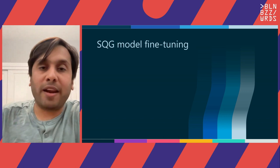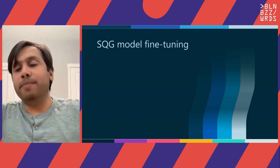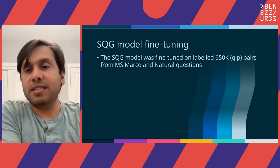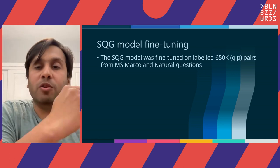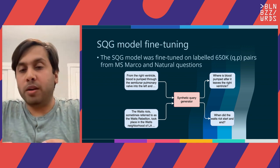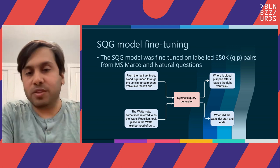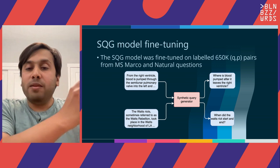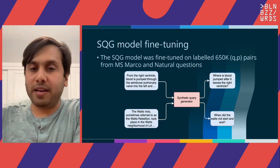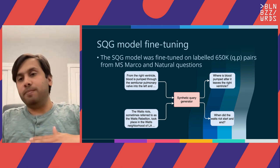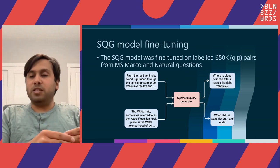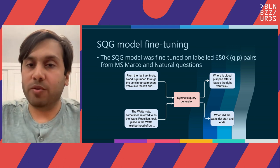Before looking at the queries the synthetic query generator creates, let me mention how this model was fine-tuned. The 1.5B model is fine-tuned for the task of query generation on 650,000 pairs of labeled queries and passages from MS MARCO and Natural Questions. We give the model a passage — say about the Watts riots, a rebellion that happened in LA — and the model is trained to ask the question 'When did the Watts riots start and end?' This is repeated for 650,000 query-passage pairs, teaching the model to ask good questions.